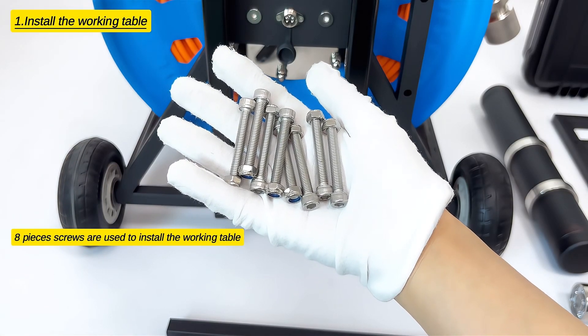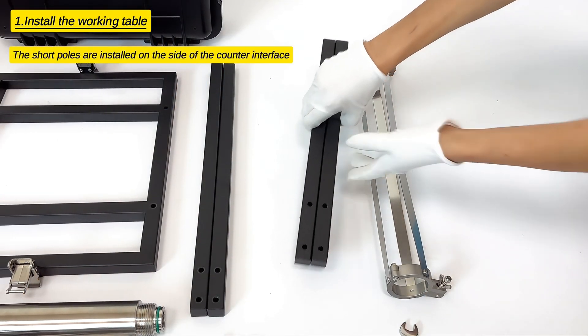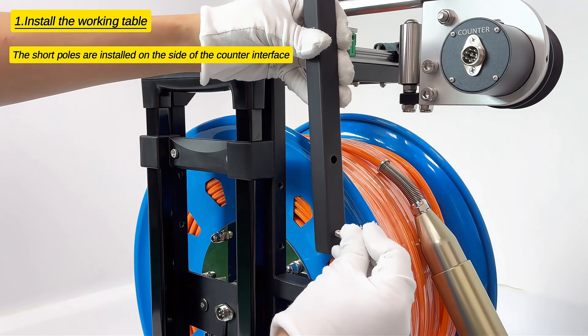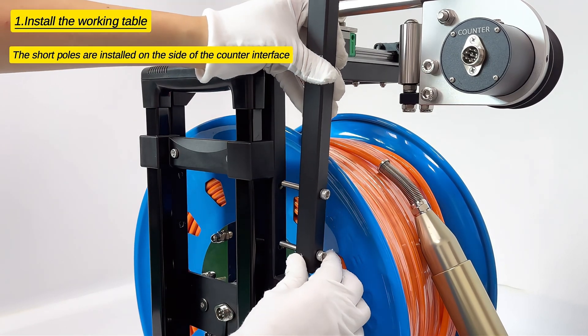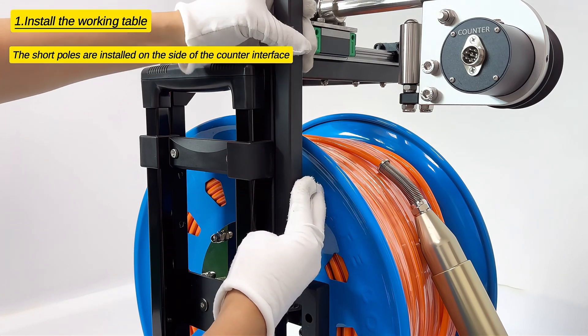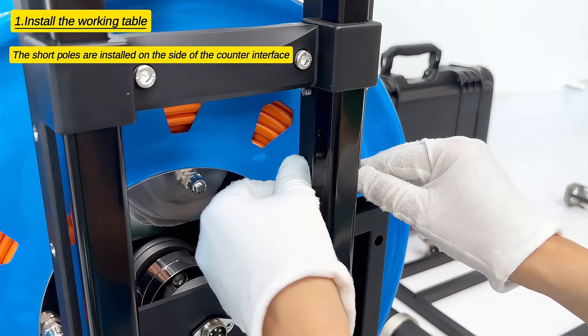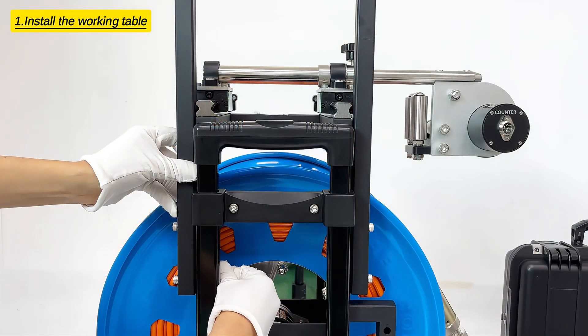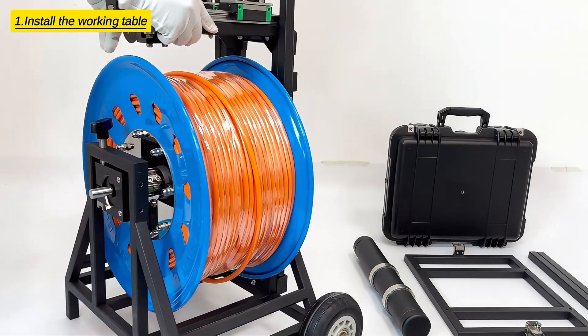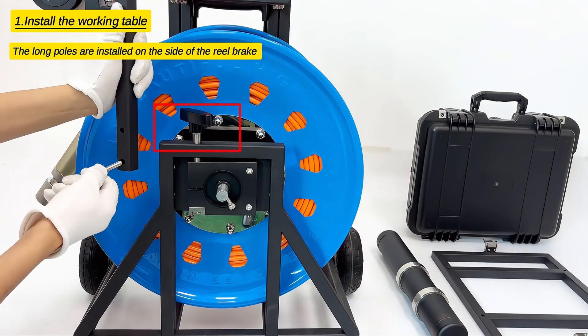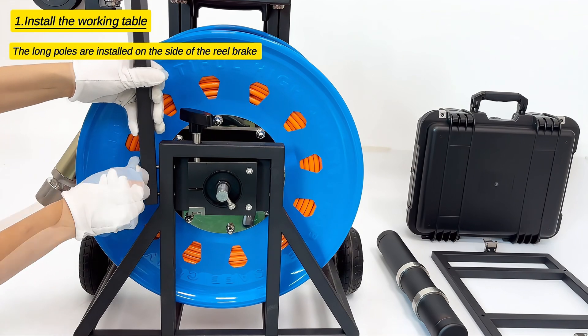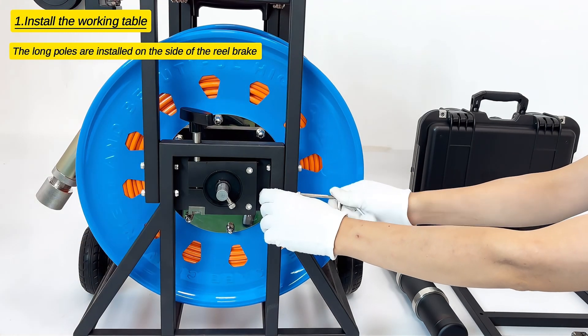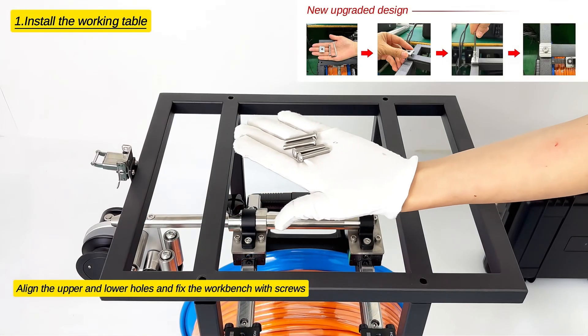Eight screws are used to install the working table. The short poles are installed on the side of the counter interface. Tighten the screws. The long poles are installed on the side of the reel bracket. Align the upper and lower holes and fix the workbench with screws.